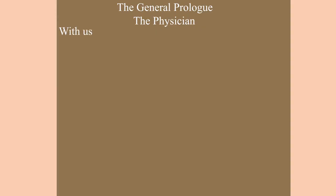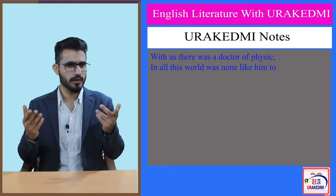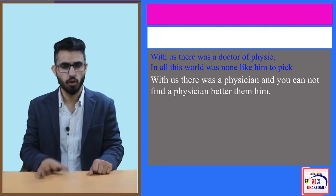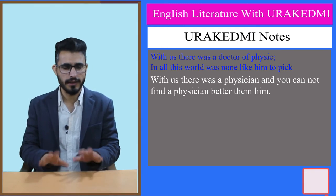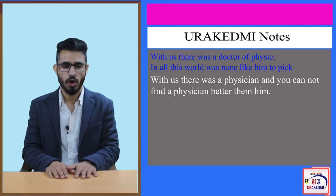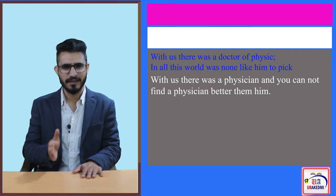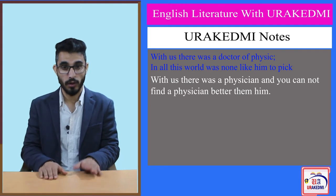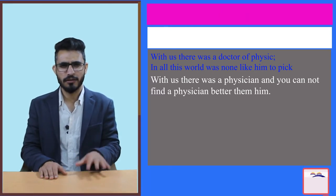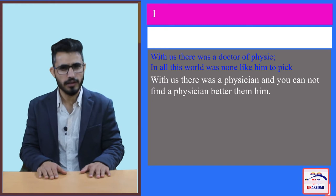The text reads: 'With us there was a Doctor of Physic; in all this world was none like him to pick.' Chaucer tells us you cannot find a better physician than this man. As noted earlier, Chaucer does not name many characters. He named the Prioress as Madam Eglantine, but the physician's name is not given. Chaucer simply tells us he was the best physician to be had.